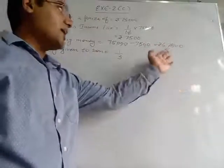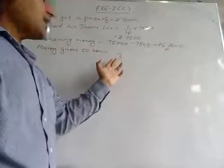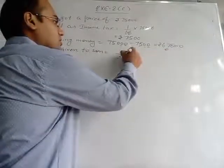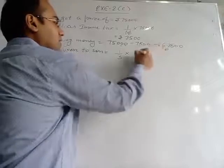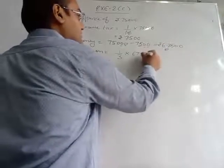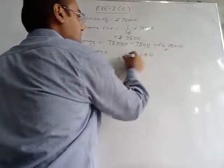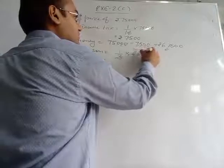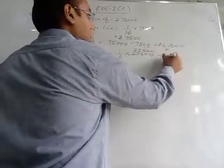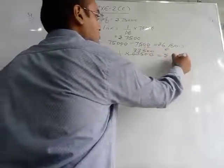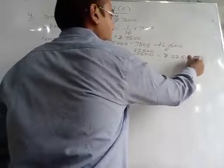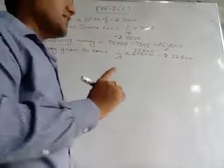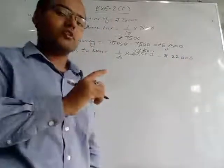From that remaining amount he gave 1/3 to his son. Since 1/3 is a fraction, we multiply 1/3 by the remaining amount of 67,500. Cancelling: 3 into 67,500 gives 22,500 rupees. So this much money he gave to his son.